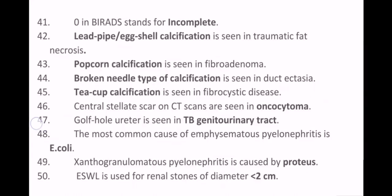Lead pipe or axial calcification is seen in traumatic fat necrosis. Popcorn calcification is seen in fibroadenoma. Broken needle type of calcification is seen in duct ectasia. Teacup calcification is seen in fibrocystic disease. Central stellate scar on CT scans is seen in oncocytoma.